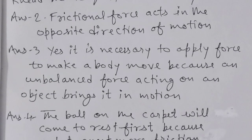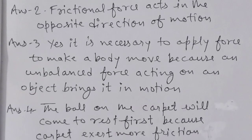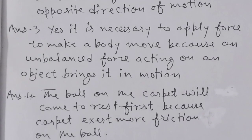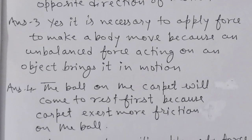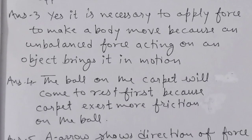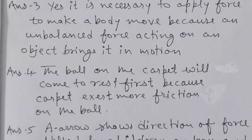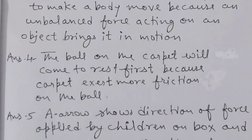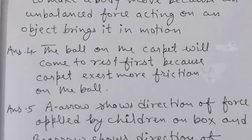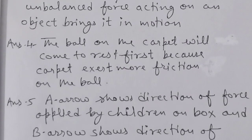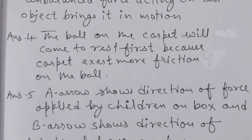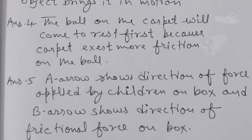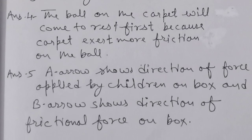Question 4: A ball rolled on a floor and another on a carpet at the same time — which ball comes to rest faster? The ball on the carpet will come to rest faster because the carpet exerts more friction on the ball. Question 5: In the given picture, what do arrows A and B represent? Arrow A shows the direction of force applied by children on the box, and arrow B shows the direction of frictional force on the box — they are always opposite to each other.